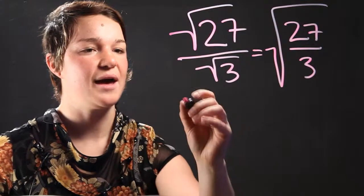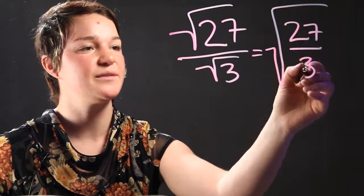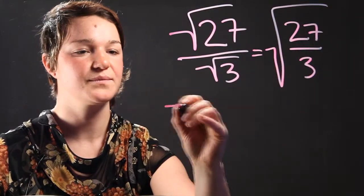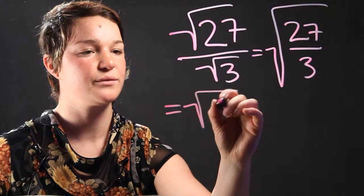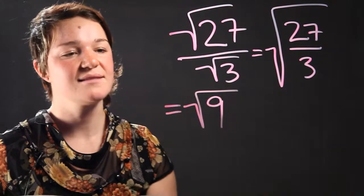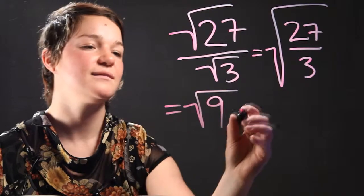Let's do our regular old division math. So divide 27 by 3, that's going to equal 9. So this is going to be the square root of 9. And simplifying square root of 9 is 3.